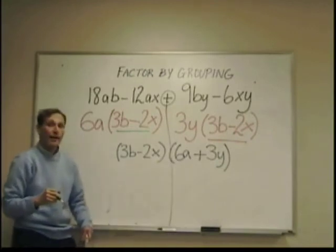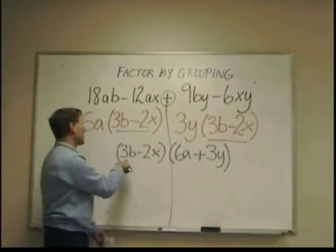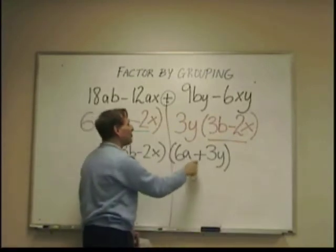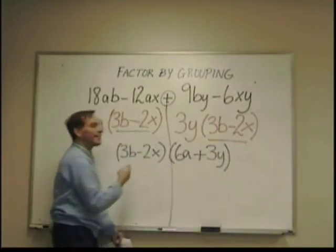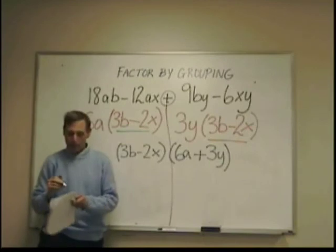So, my answer, my factor is three b minus two x. And my second factor, six a plus three y. That's how you factor this polynomial.